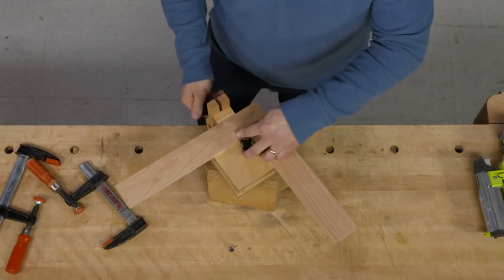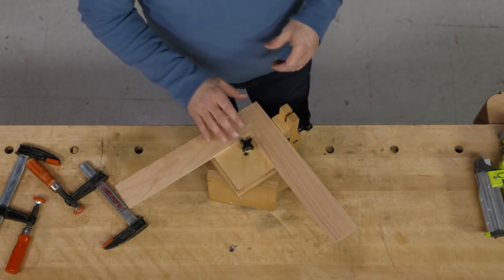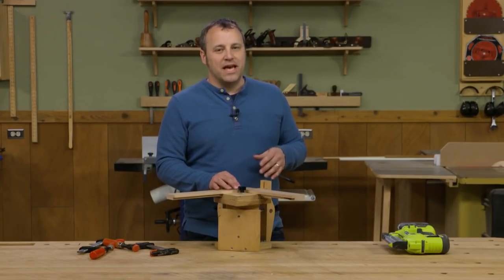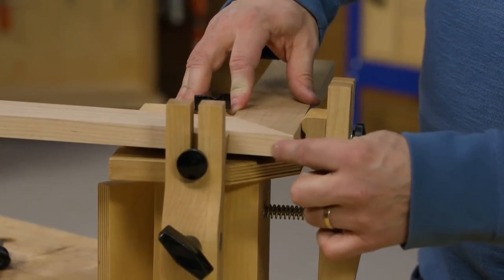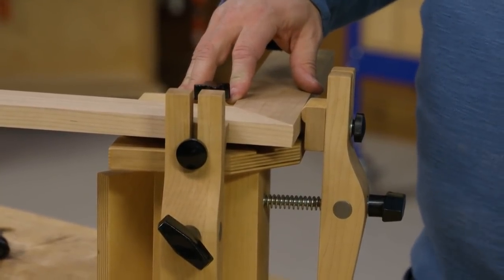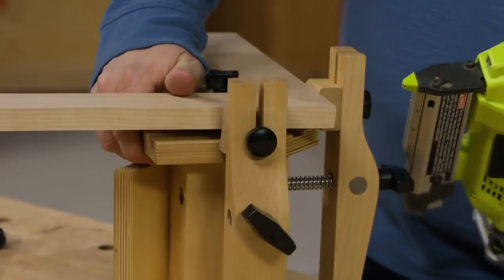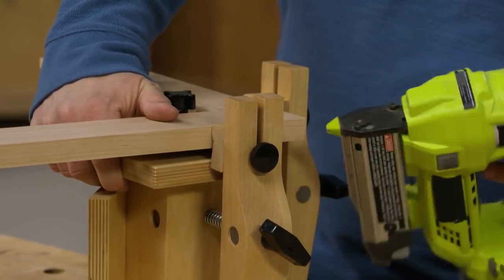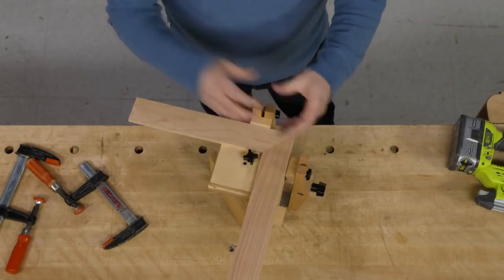We got a nice tight miter joint. Now another thing that I like about this vise—and this is something that we learned from picture framers—is that we're leaving the corner, the end of the corner here, exposed on the joint. And that's for a good reason. I can come in now with a brad nailer, reinforce the joint with nails—pow, pow—each side. And now I can have this pulled out and I can work on the next corner or another assembly.